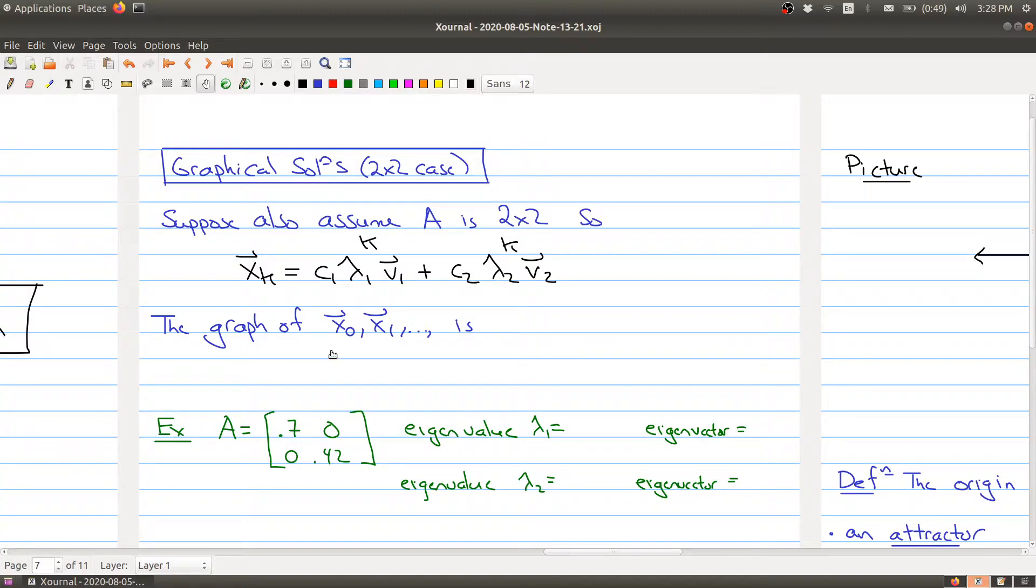Now what we want to do is we want to plot each of these vectors that we get. So we get X naught, where we started from, then we want to plot X1, then plot X2, and so on.